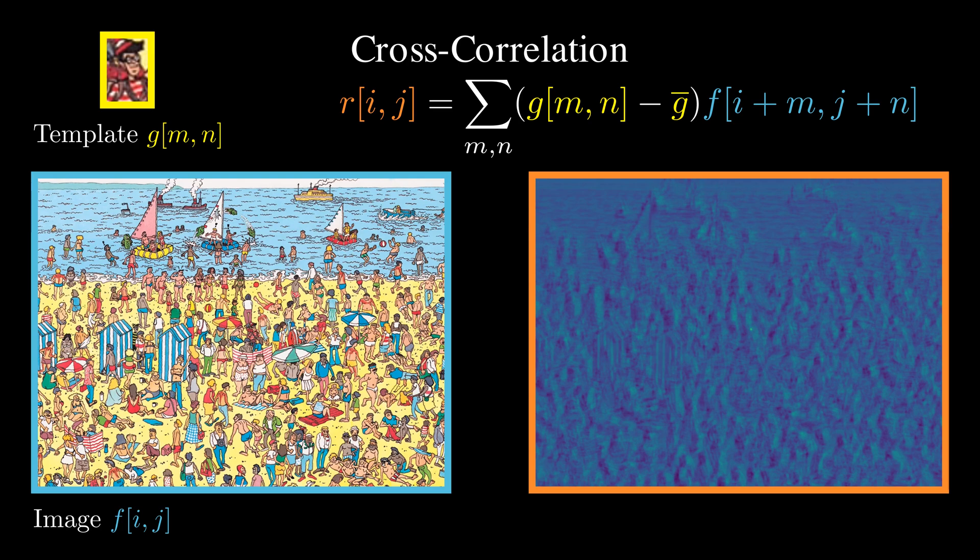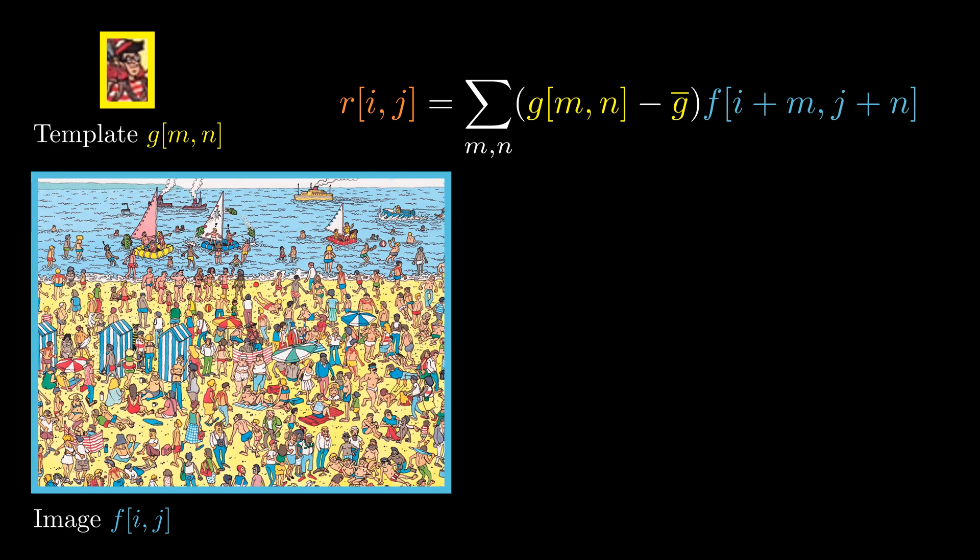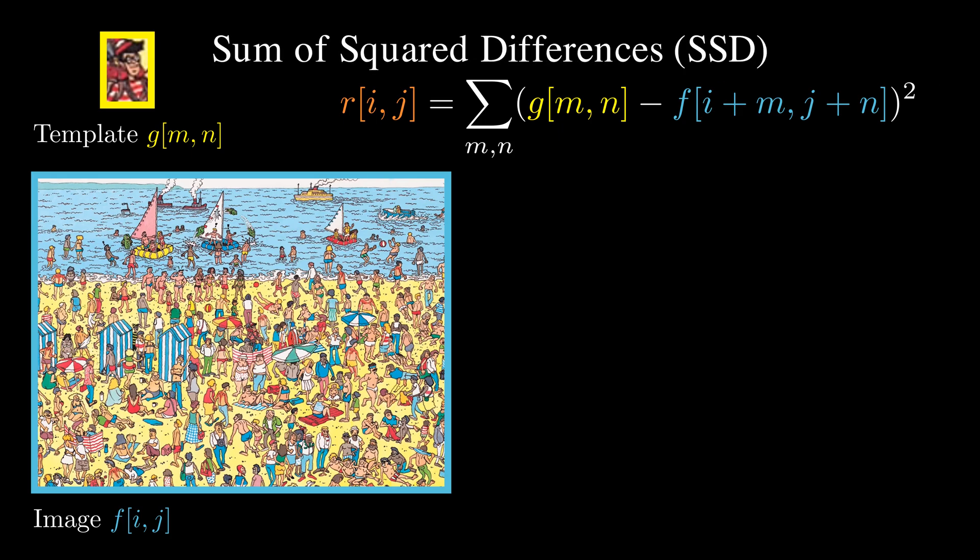But sometimes we need even more accurate matching. A common way to achieve this is by computing the square difference between the template and each image patch. This technique is called sum of squared differences, SSD. Turns out we can implement this efficiently with linear filters as well.